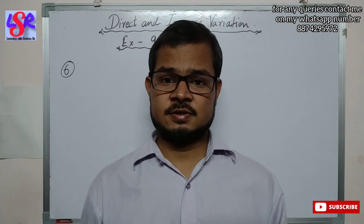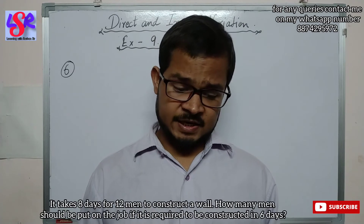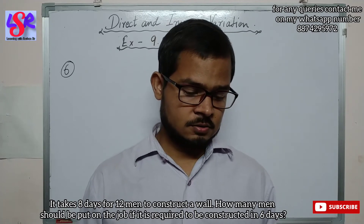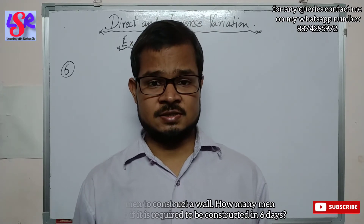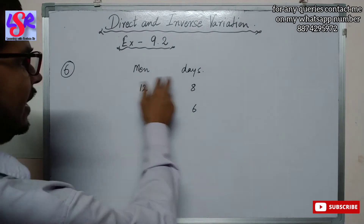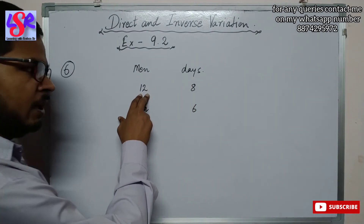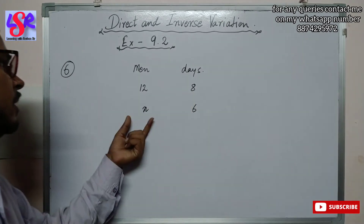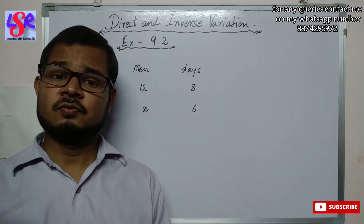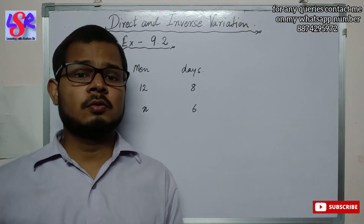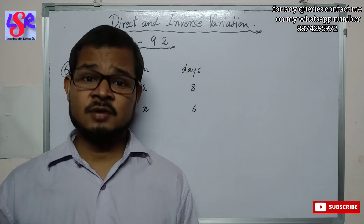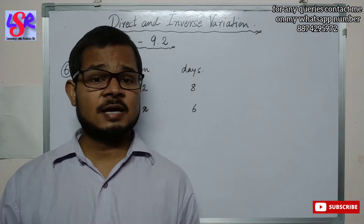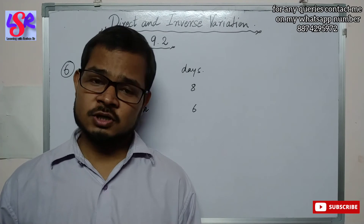Now let's do question number 6. It takes 8 days for 12 men to construct a wall. How many men should be put on the job if it is required to be constructed in 6 days? The work is fixed; if we employ more men the time taken will be less, and if we employ fewer men the time taken will be greater. So it is a case of inverse variation.